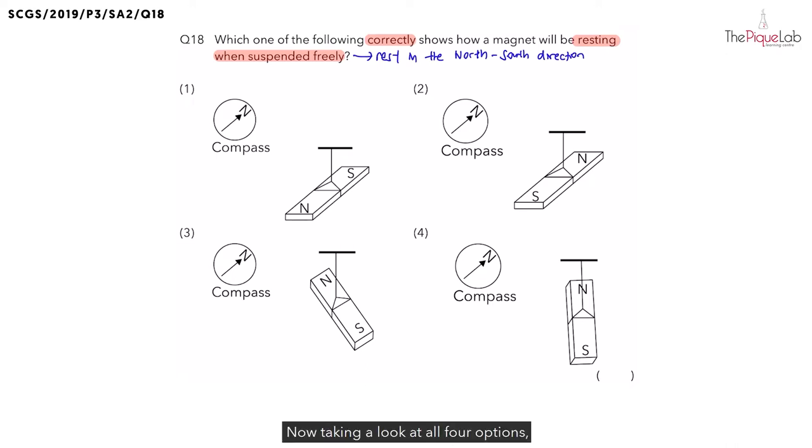Now taking a look at all four options, we can see that the needle of the compass is going to come to rest in this direction. So we know that this is the north-south direction we should expect the freely suspended magnet to come to rest to.